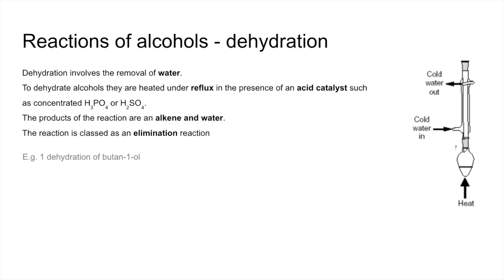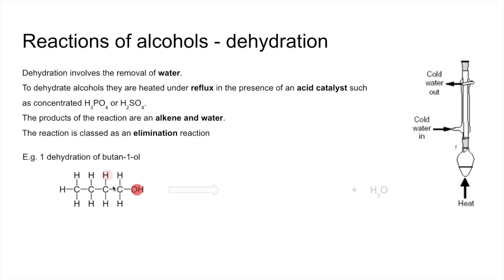The first dehydration example is butan-1-ol. A displayed formula is best for this type of reaction. We need to remove a water molecule, so we need an OH and an H. There's the OH; the rule is to take the H from the adjacent carbon. Either adjacent carbon gives the same product. Where the groups have been removed, a double bond forms — so taking that H gives us the water molecule, and the alkene produced is but-1-ene.